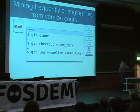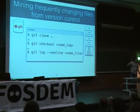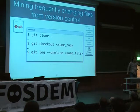Then we wanted to know how frequently these files would change. We did something very simple: we just look at the Git repository, and for each line in the log history, we count that as one change.